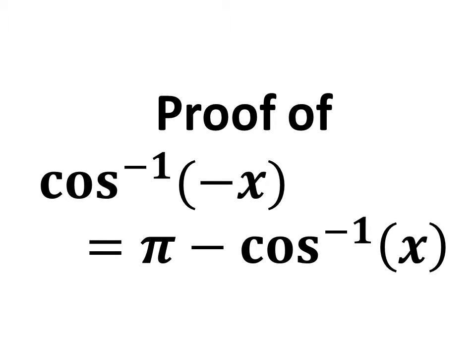In this video, we will learn how to prove the trigonometry identity: inverse cosine of minus x is equal to pi minus inverse cosine of x.